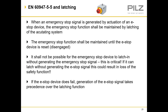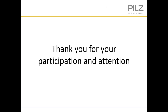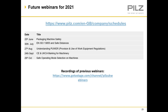That puts a stop to today's webinar on the standard EN ISO 13850 for emergency stop devices. Thank you for attending our webinar today — we hope you found it useful and insightful. To keep you updated on upcoming webinars from PILTS Automation: Packaging Machine Safety on the 25th of June, EN ISO 3855 and Safe Distances on the 30th of July, Understanding PUWER on the 27th of August, CE and UKCA Marking for Machinery on the 24th of September, and Safe Operating Mode Selection on Machinery on the 29th of October. You can register for all of these on the website address shown.